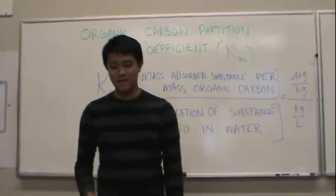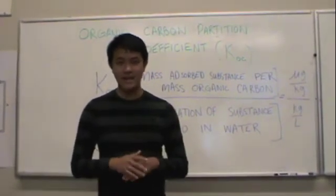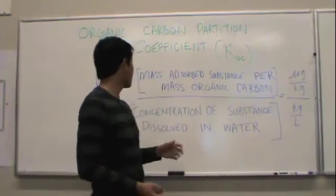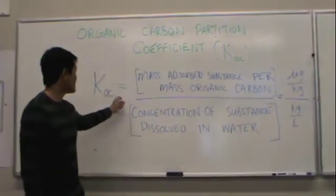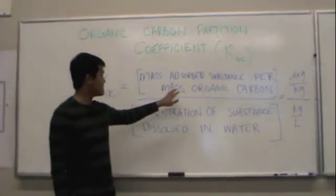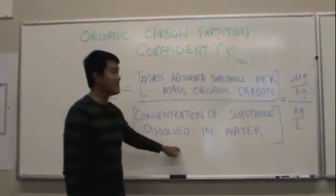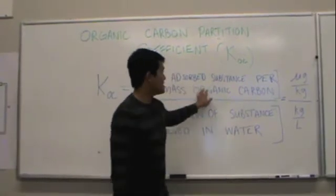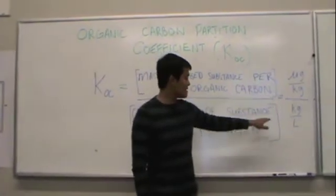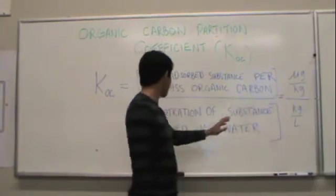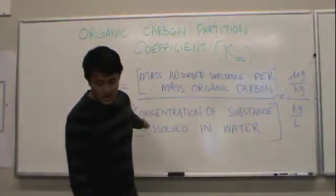The organic carbon partition coefficient is a measure of the tendency for organic substances to be absorbed by soil or sediment. The equation can be expressed as K sub OC equaling the mass absorbed substance per mass of organic carbon over the concentration of substance in the water. The units for the numerator are in micrograms per kilogram, and the units for the denominator are in kilograms per liter, so the units of K sub OC will be in liters per kilogram.